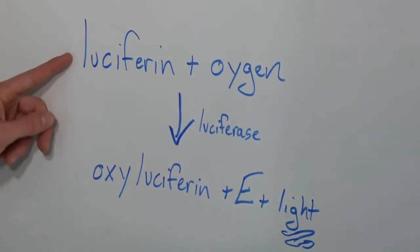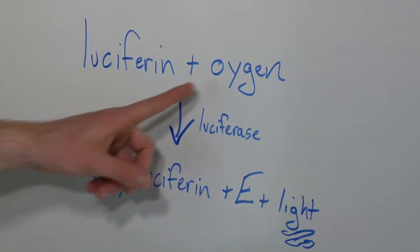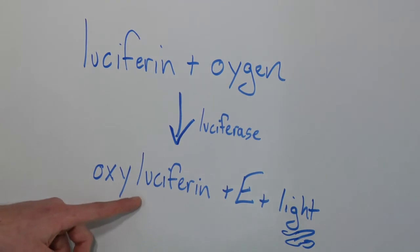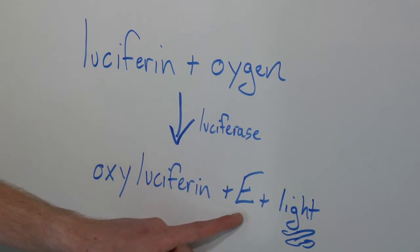What happens inside of a firefly's abdomen is luciferin, which is present, combines with oxygen in the presence of luciferase, so the enzyme is needed, and you produce something called oxyluciferin. Really, that's not too important. The important part is that you also produce energy and you produce light by this chemical reaction.